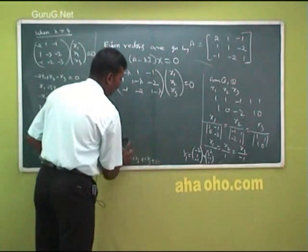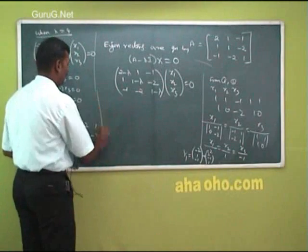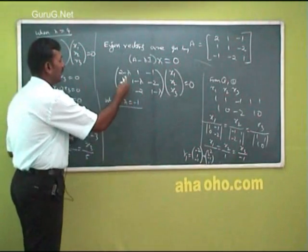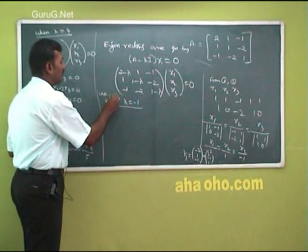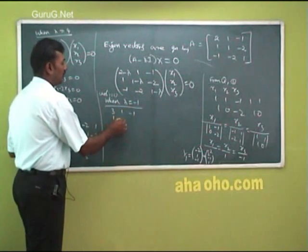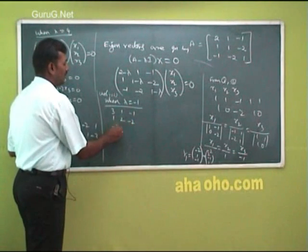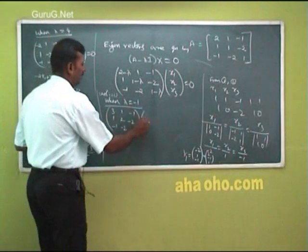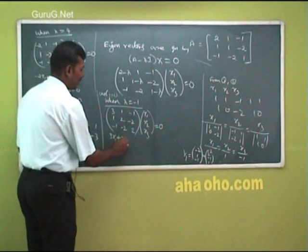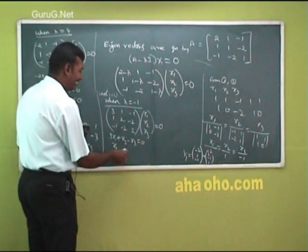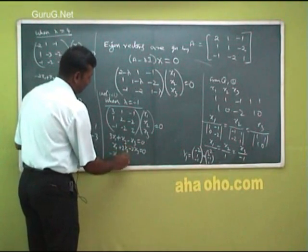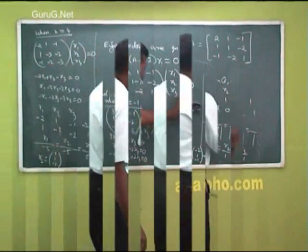Now the third one — case 3, when lambda equal to minus 1. Put minus 1 in, so the matrix becomes [3, 1, -1; 1, 2, -2; -1, -2, 2]. Form the equations: 3 x1 plus x2 minus x3 equal to 0; x1 plus 2 x2 minus 2 x3 equal to 0; minus x1 minus 2 x2 plus 2 x3 equal to 0.